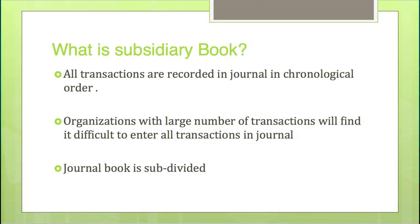A Subsidiary Book is the subdivision of the Journal. Transactions are first recorded in the Journal on the basis of dates. But for a very large organization, there are numerous transactions taking place daily, so it becomes difficult to record all transactions in just the journal book. For convenience of recording, the journal book can be subdivided. These are known as Subsidiary Books — books of primary entry — and the journal is classified into different subsidiary books to record different types of transactions.